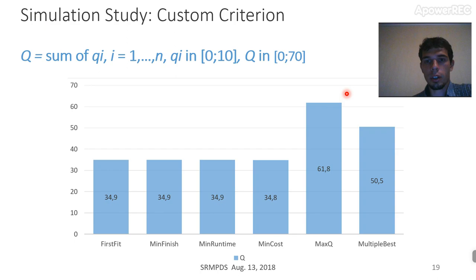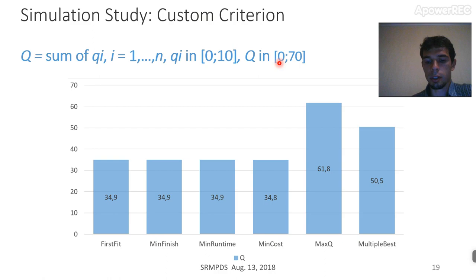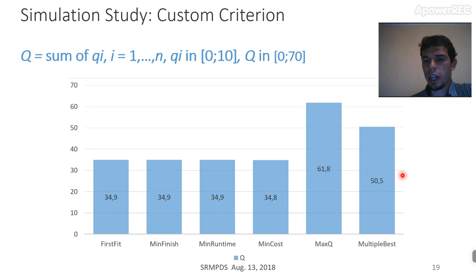Since Q was generated randomly on the interval from 0 to 10 for each node, and we have 7 nodes, the practical limit for Q for a 7-node window is 70. MaxQ is quite close to this limit, while all other algorithms are almost perfectly at the middle of this interval because they simply don't perform any Q optimization. The multiple-best algorithm, which selects the best value from several randomly found alternatives, provides a quite good value but is still worse compared to MaxQ, which almost surely provides the optimal solution.